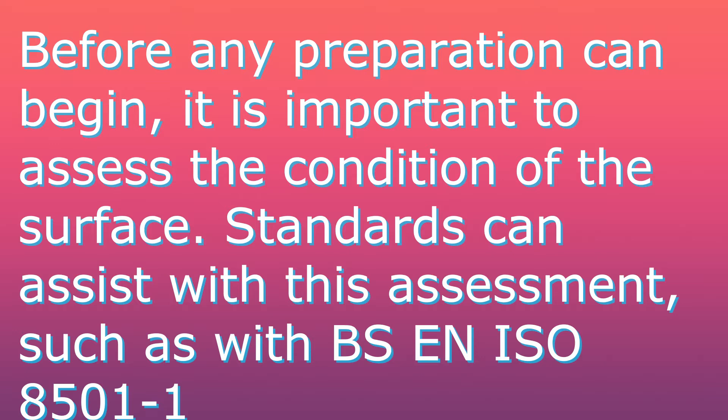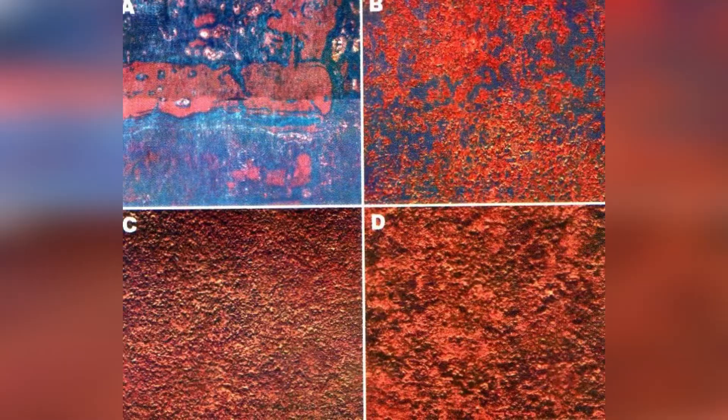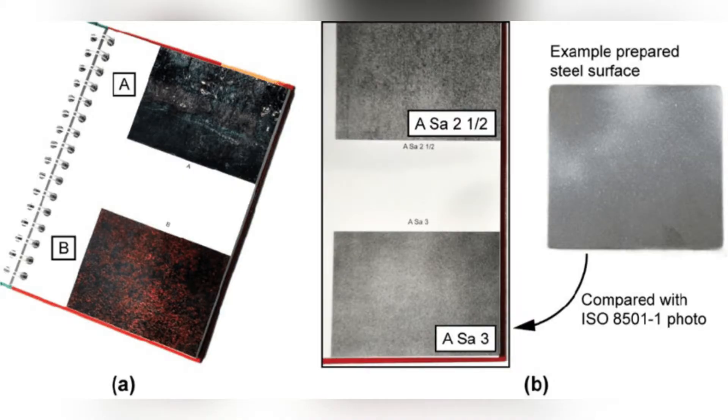Such as BS EN ISO 8501-1, which provides details of rust grades ranging from A to D for steel surfaces. These grades may help determine if surface preparation will be successful and what techniques are going to be used.